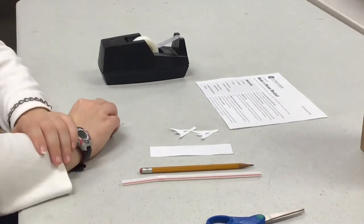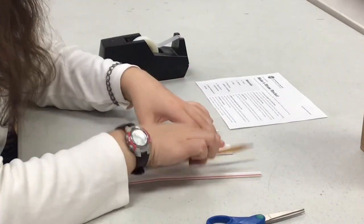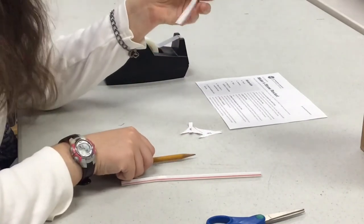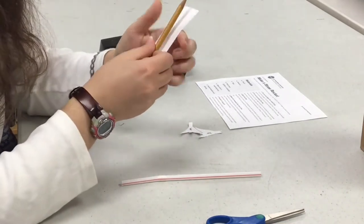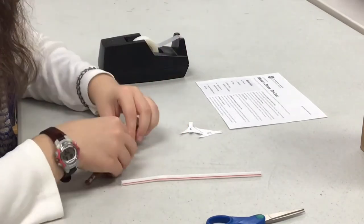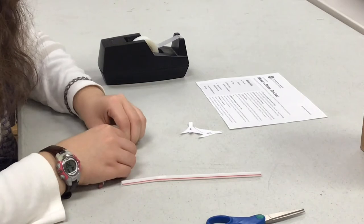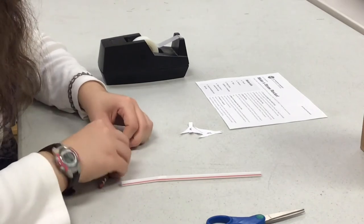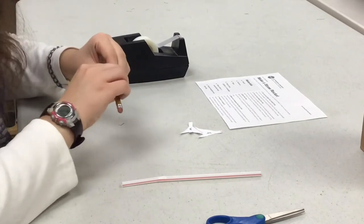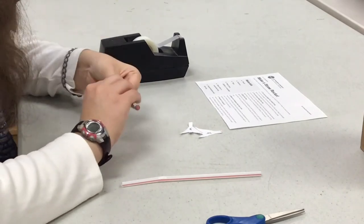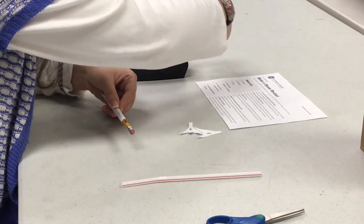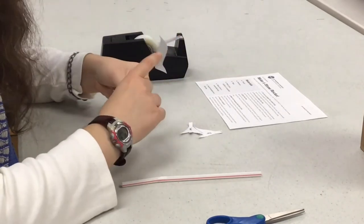So this is how you make the straw rocket. Take your pencil, after you've cut out your pieces, take your pencil and use this long rectangle. Circle it around lengthwise. Since the pencil is approximately the same size as the straw, that means that it will fly, roughly speaking, or at least it'll fit on and serve as a decent template.